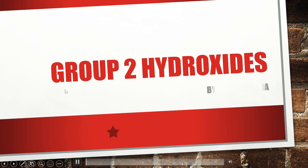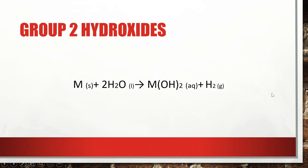Group 2 hydroxides. First, let's have a look at the Group 2 hydroxides general formula. If M is our Group 2 metal in the solid form, we add water — either in the liquid or gaseous state depending on the reactivity of our Group 2 metal — and after the reaction we get the hydroxide plus hydrogen gas.